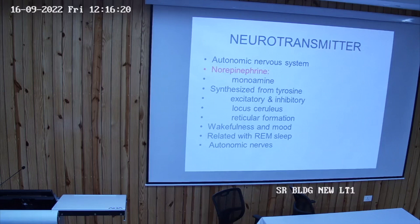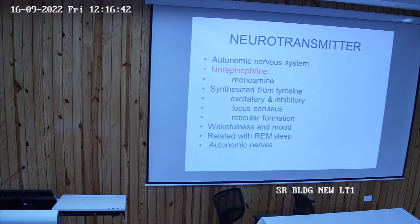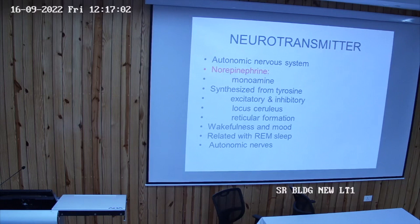The major site of release of norepinephrine is an area known as the locus ceruleus, which is involved in sleep and wakefulness. Neurons of the locus ceruleus supply noradrenaline to all parts of the central nervous system. Reticular formation neurons also help in the sleep-wakefulness cycle. Norepinephrine is related with wakefulness, mood, and REM (rapid eye movement) sleep. It is also the neurotransmitter of sympathetic post-ganglionic nerve fibers in the autonomic nervous system.